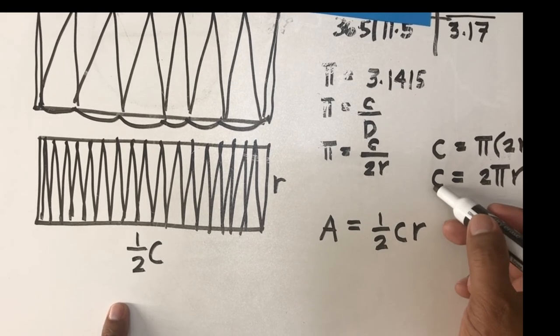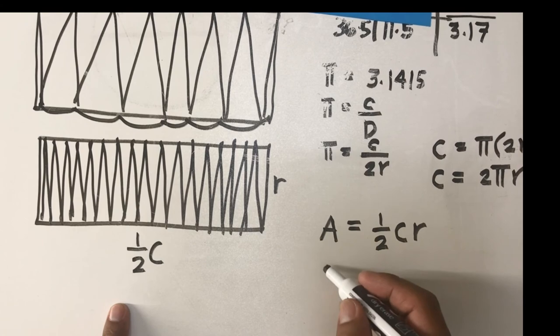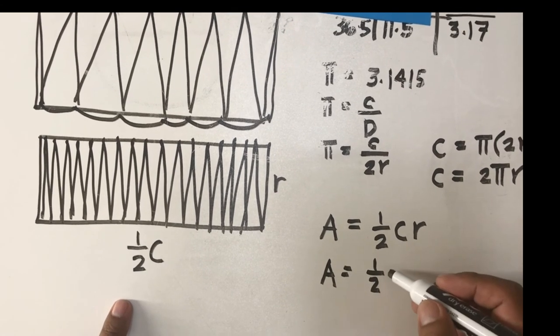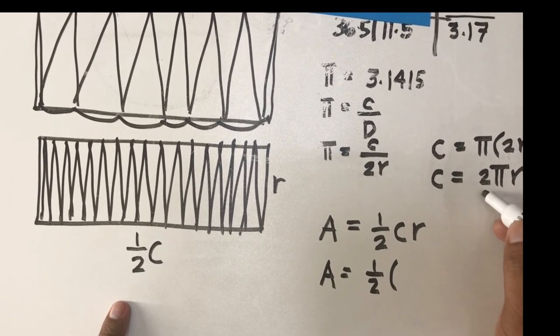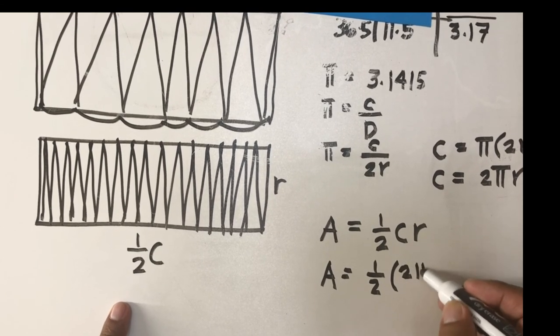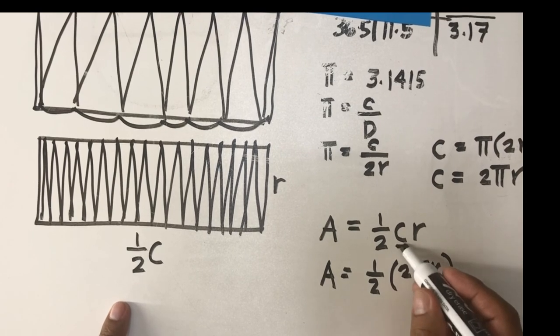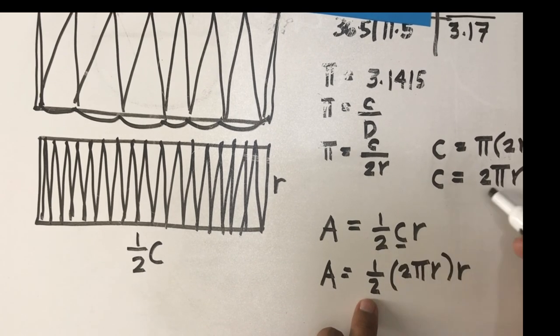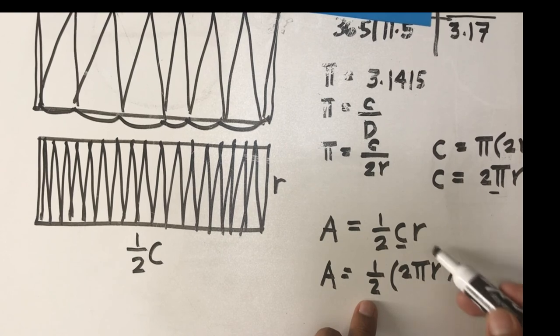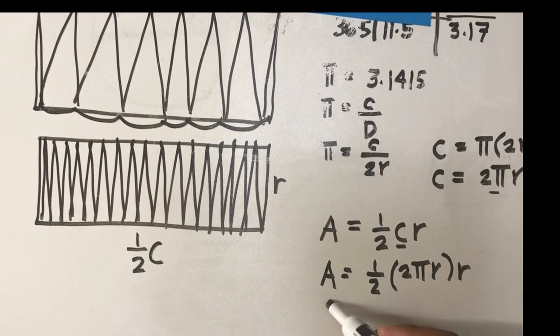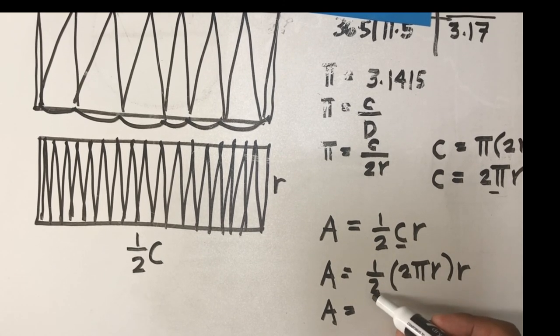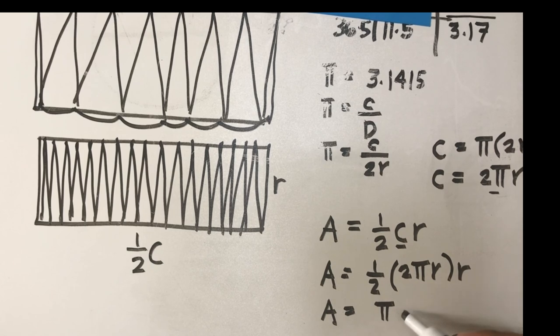But early on we said that C is equal to 2πr, so by substitution we have one half, instead of C we use its equivalent value 2πr, times r. Finally, we have A equals one half times 2—you'll be able to cancel out the 2, so you have 1 times π is π, r times r is r².